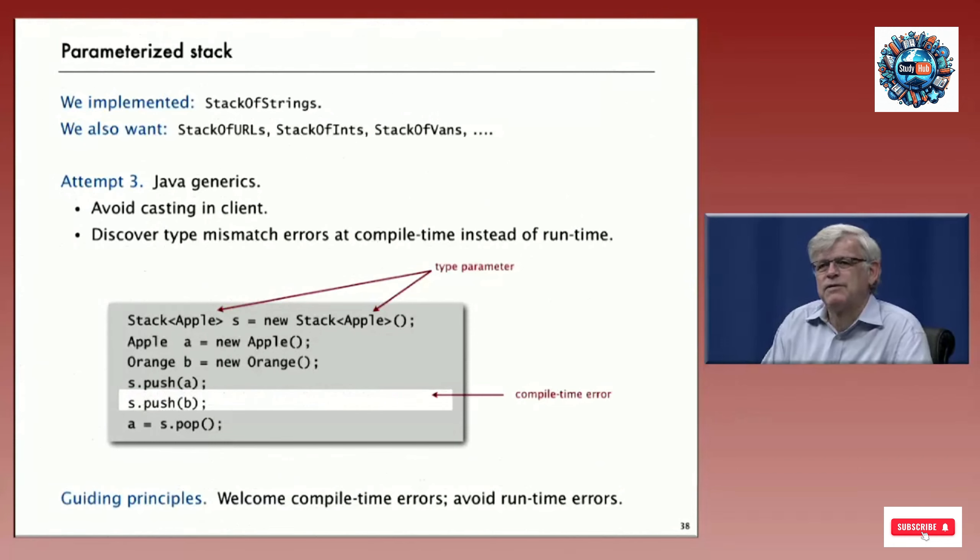The third attempt uses generics. That way, the client code doesn't do casting. We can discover mistakes in type mismatches at compile time instead of at run time. With generics, we can have a type parameter on our class. That's inside angle brackets in this code.